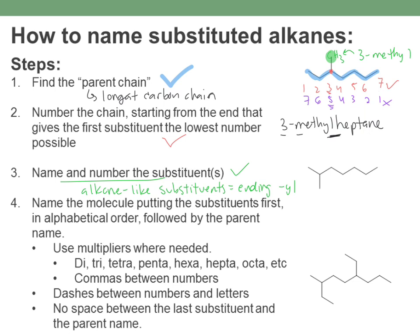For the second example, I have the same 7-carbon parent chain, but this time the methyl group is on carbon 2 instead of carbon 3, so this is 2-methylheptane. They look very similar — all I did was move the methyl over one carbon — but these are two different isomers of C8H18 with different physical properties like boiling point and melting point.